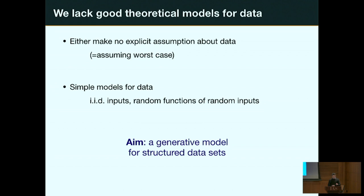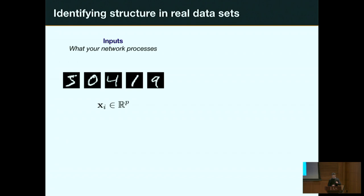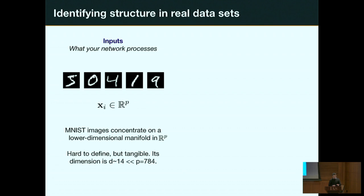The aim of this work was to find a generative model for structured datasets. By structure I have two types in mind, both illustrated with MNIST. The first type concerns the inputs: MNIST digits live in a 784-dimensional space, but not every point in that space is an MNIST image. These images concentrate on some lower-dimensional manifold, whose dimension you can measure to be something like 13 or 14 — much lower than 784.